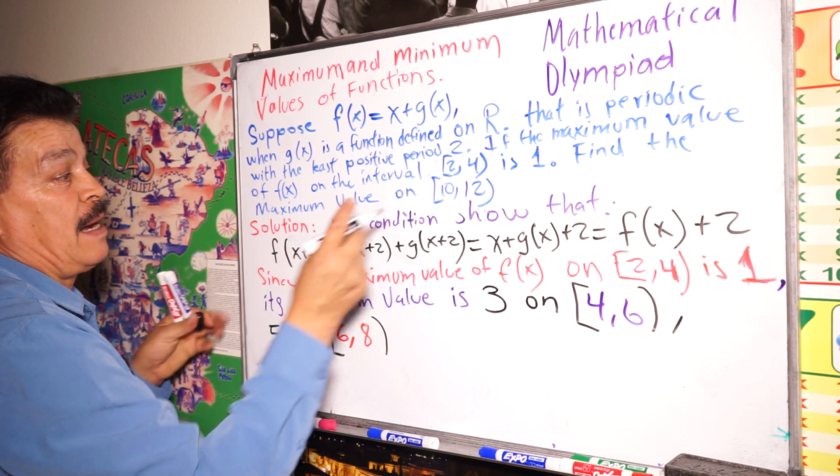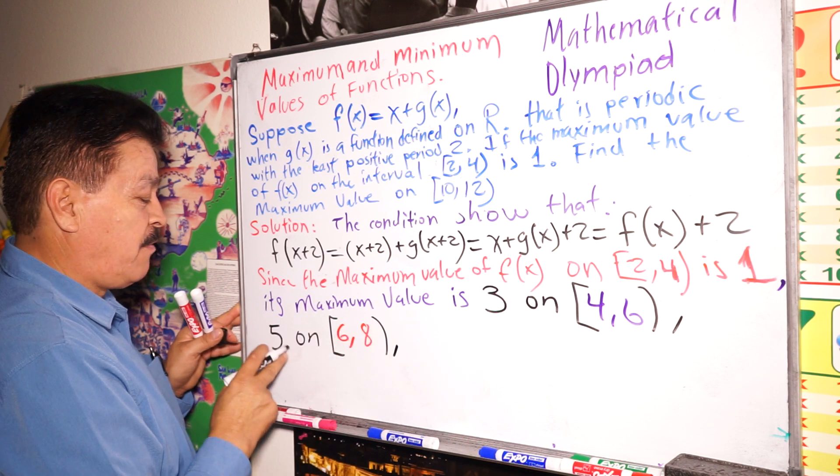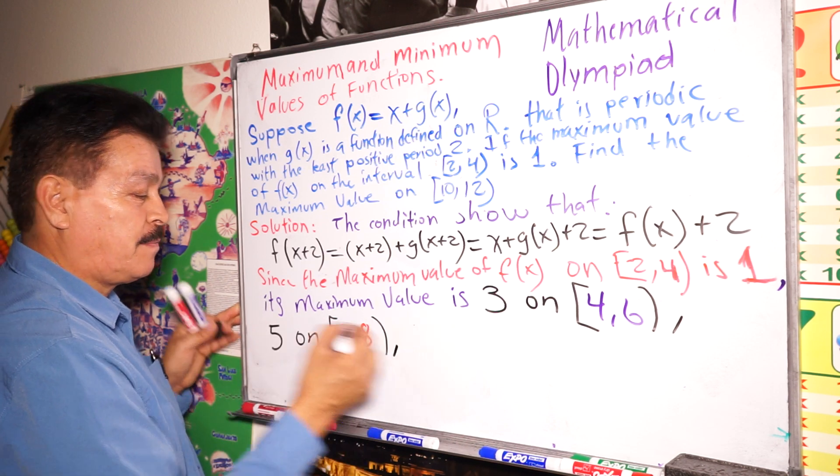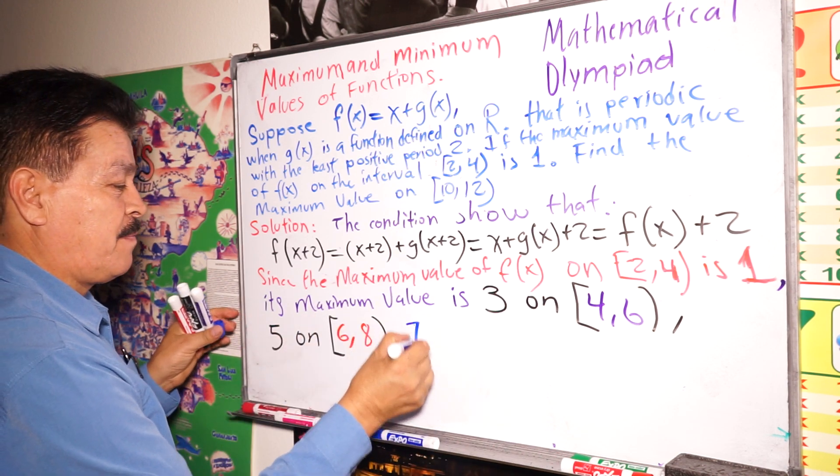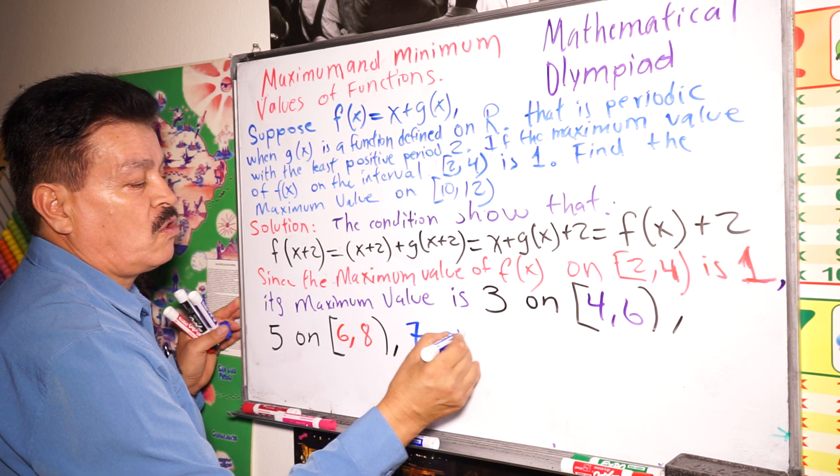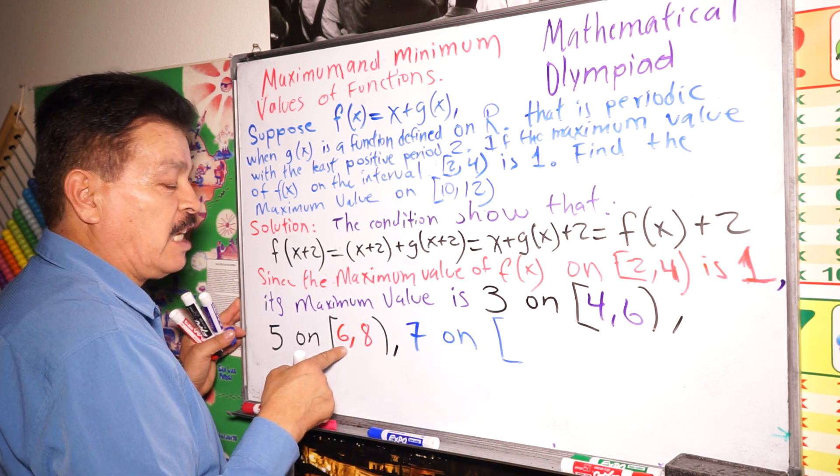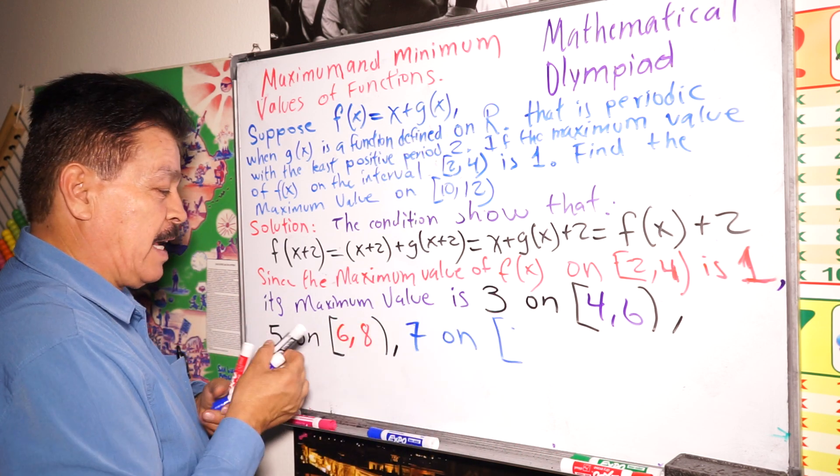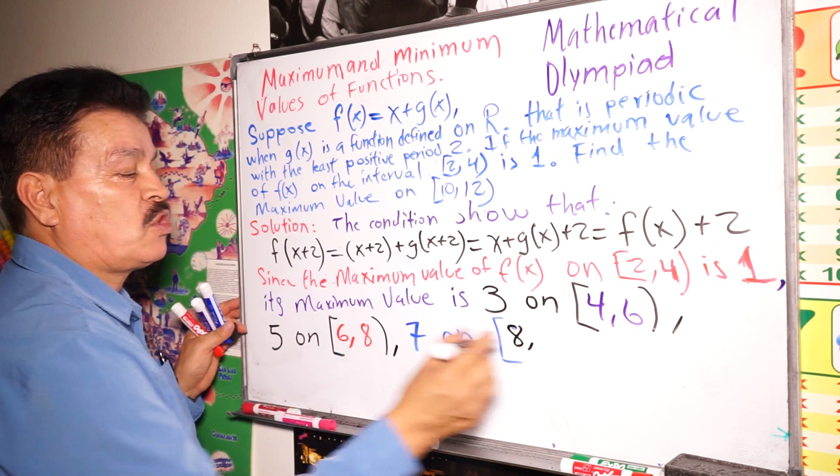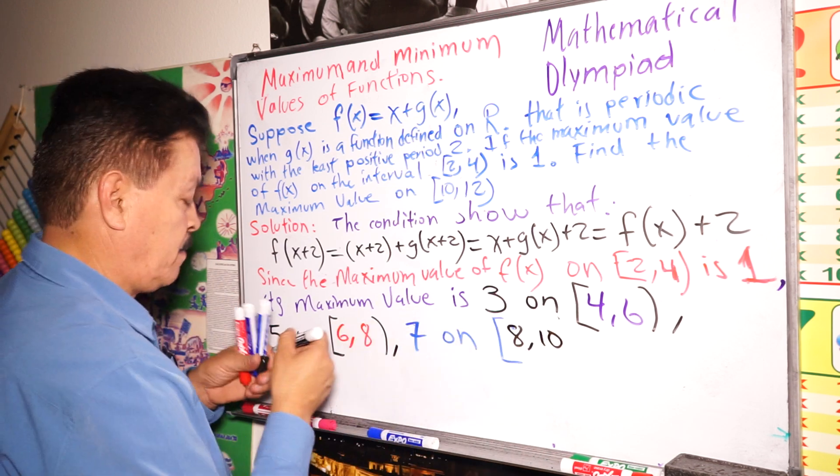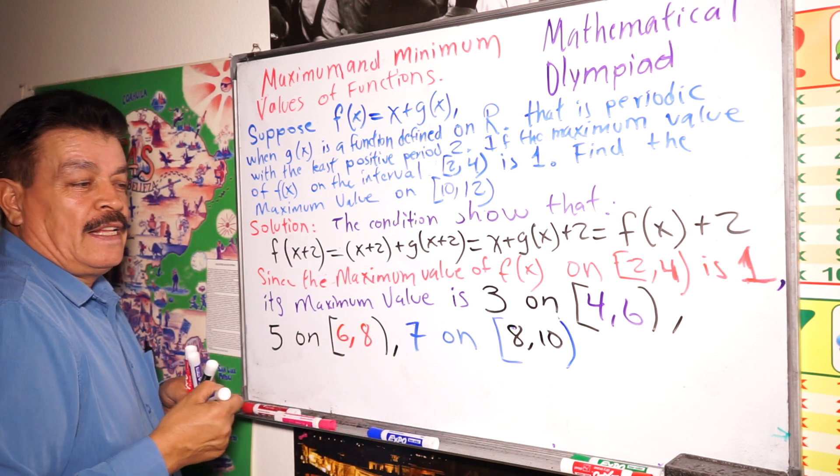Because we need to get the value on [10,12], just keep going. So now, 7 - 5 plus 2 is 7, let's write 7. On which point? 6 plus 2, 8, and then 8 plus 2 is 10, right.